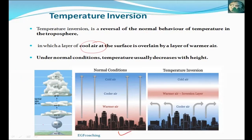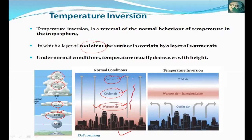In the normal condition, the warmer air is at the surface — say 20 degrees Celsius — then cooler air above at 14 degrees Celsius, then cold air at 2 degrees Celsius, and so on. The temperature continuously decreases with altitude in normal conditions.